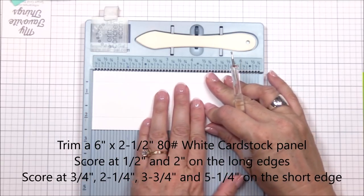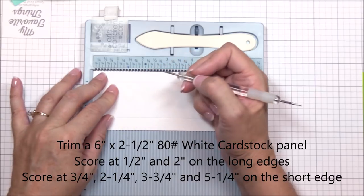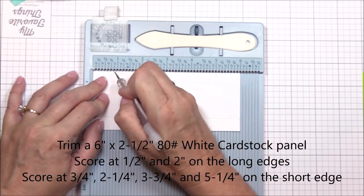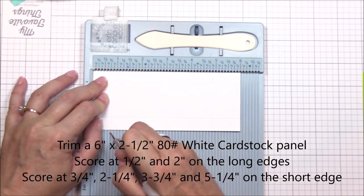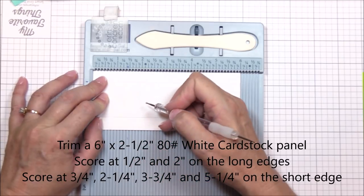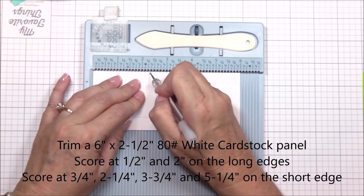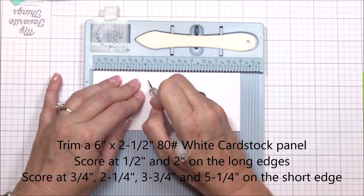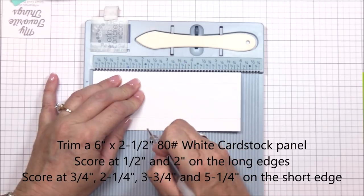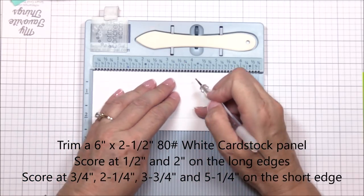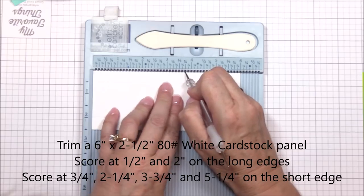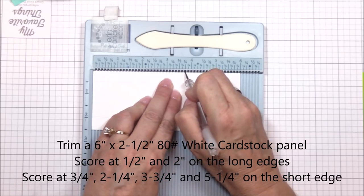I started off with a 6 inch by 2 and a half inch panel that I scored at half inch and 2 inches on the long edges of the panel, and then at 3 quarter inches, 2 and a quarter inches, 3 and 3 quarter inches, and 5 and a quarter inches on the short edge of the panel. I've noted the scored areas on the screen so that you can take a screenshot for future reference.